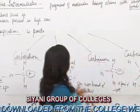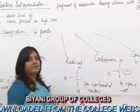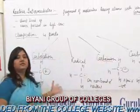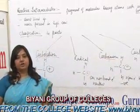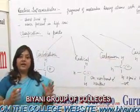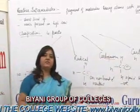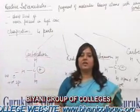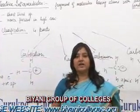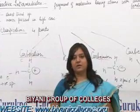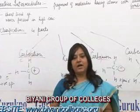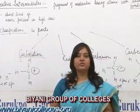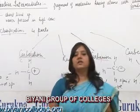All of these — carbanions, carbenes, radicals, and carbocations — are called reaction intermediates: produced in between the reaction, consumed in between the reaction, and they cannot be separated out at the end of the reaction. However, they are very important for a reaction to proceed. Thank you very much.